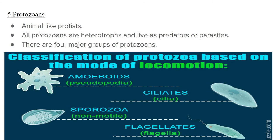Moving to the fifth group — protozoans, or primitive animals. They are entirely animal-like protists, considered the first animal-like organisms, and all are heterotrophs. They either live as predators or as parasites on other organisms. These protozoans are again classified into four major groups based on how they move, i.e., their locomotory organ.